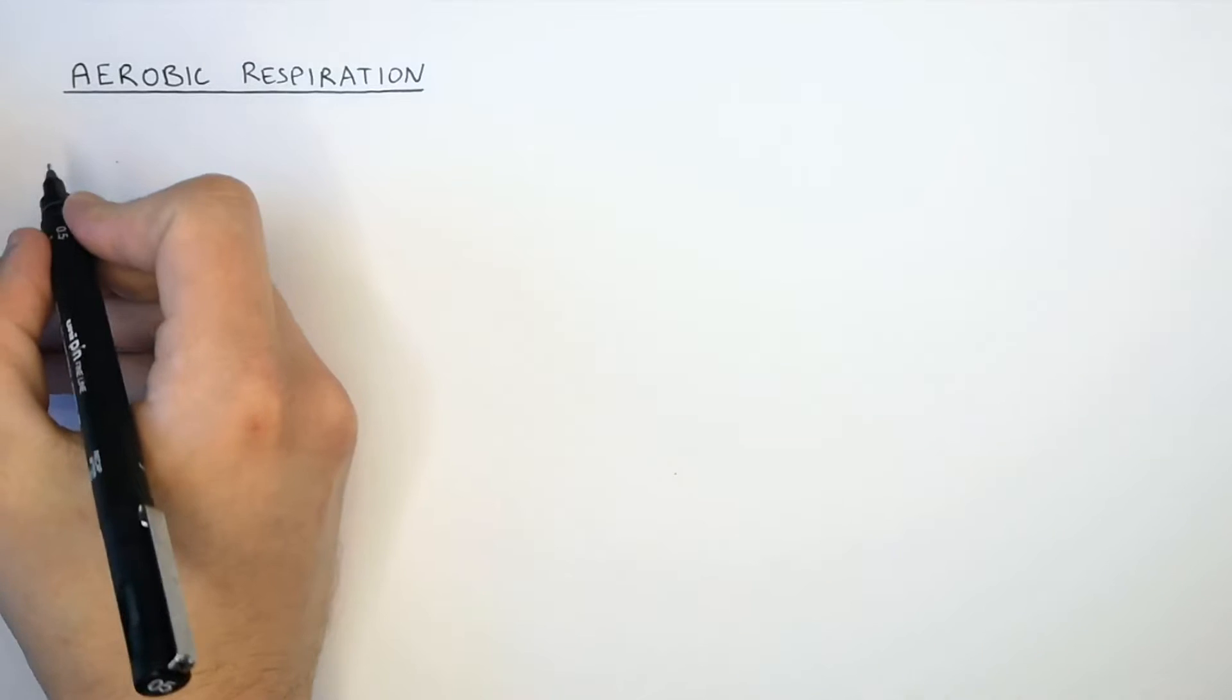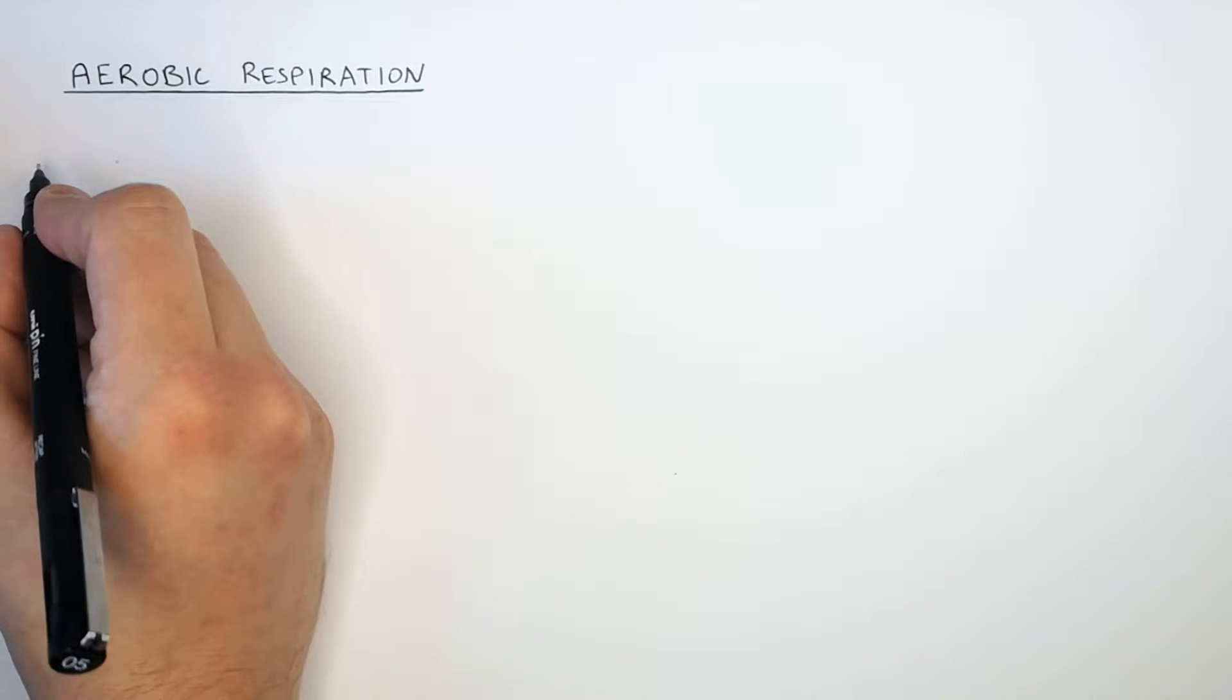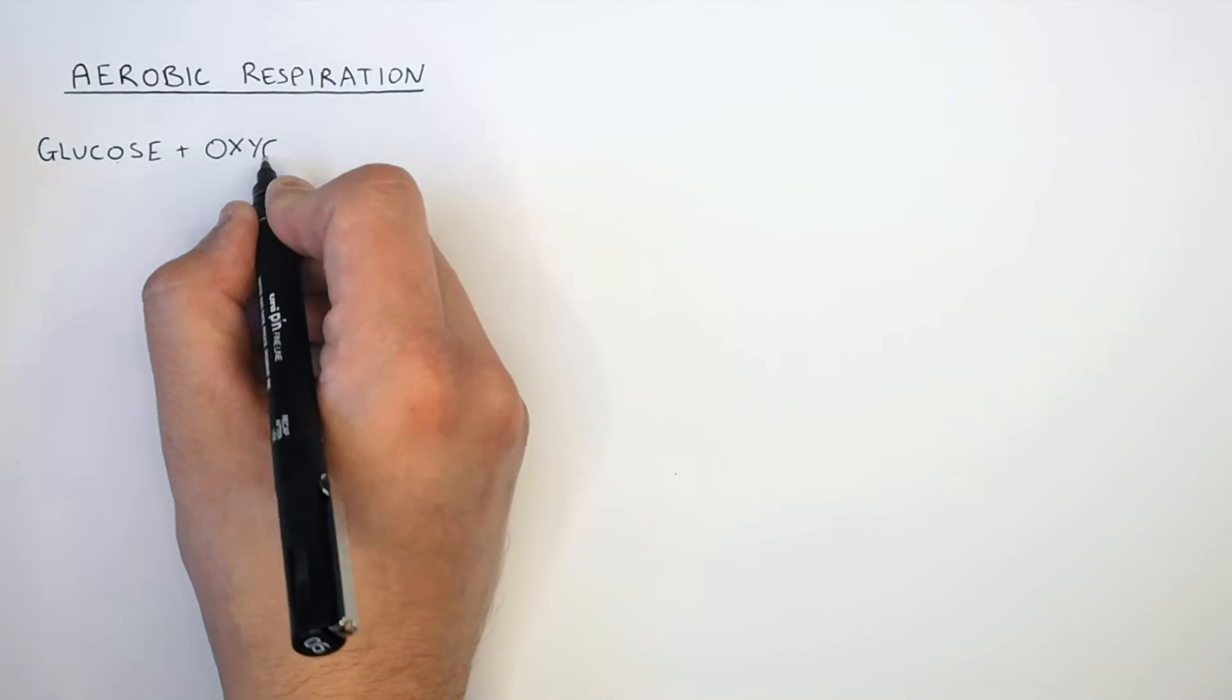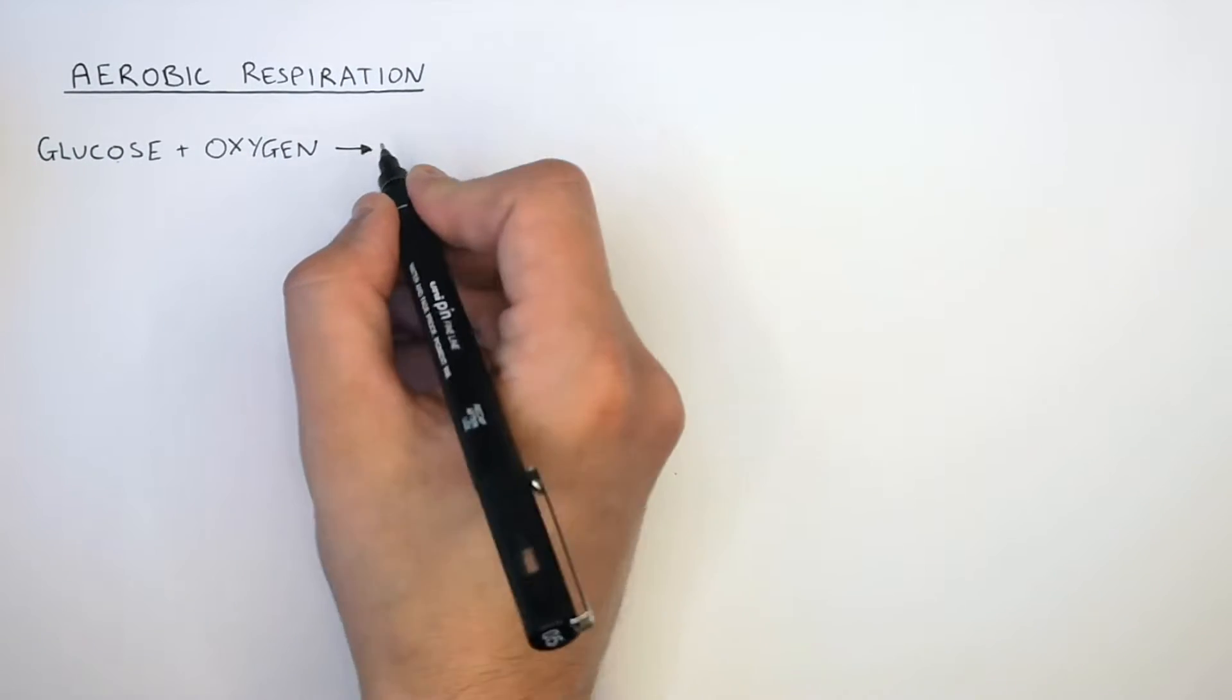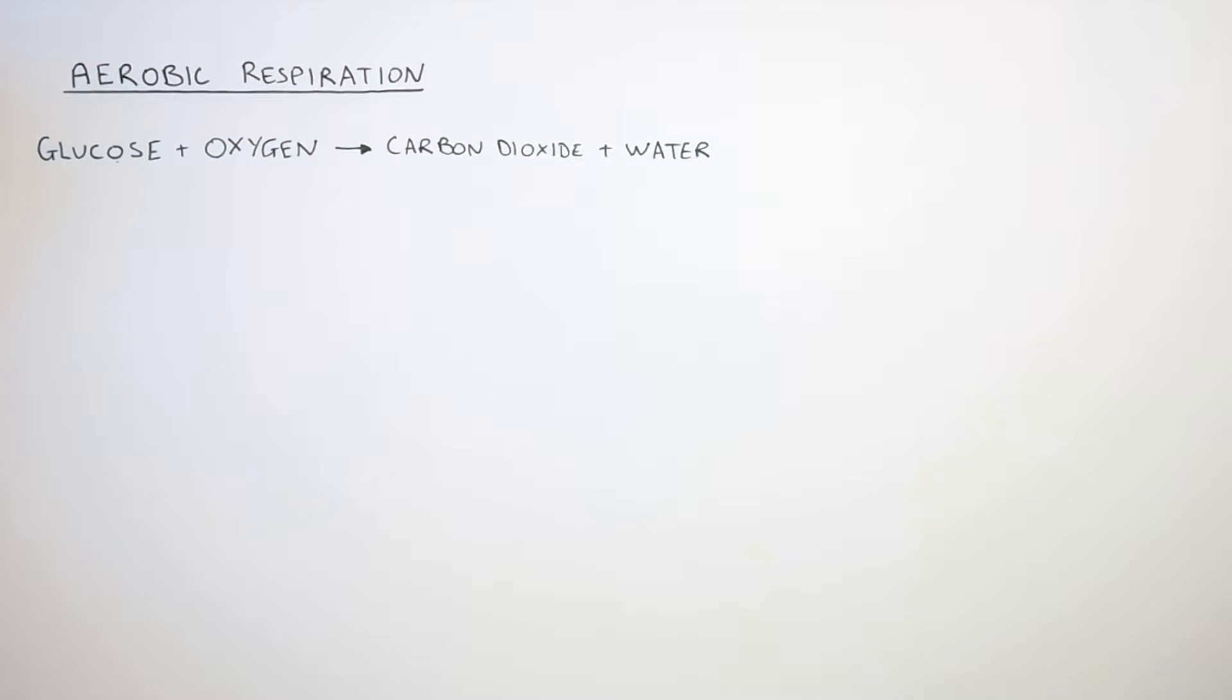What is the equation for aerobic respiration? Aerobic respiration is the complete combustion inside the mitochondria of glucose by oxygen. It's glucose plus oxygen reacting to form carbon dioxide and water. This is an exothermic reaction, so energy is released.